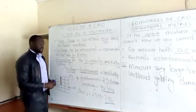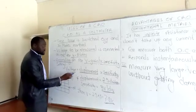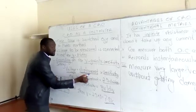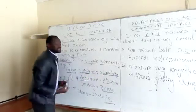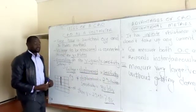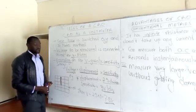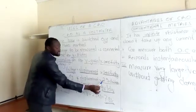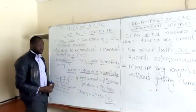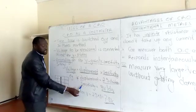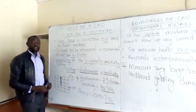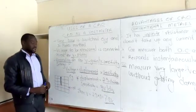Therefore our voltage will simply be the displacement times the sensitivity. A simple example: the displacement is 2.5 divisions and our sensitivity is set at 3 volts per division.